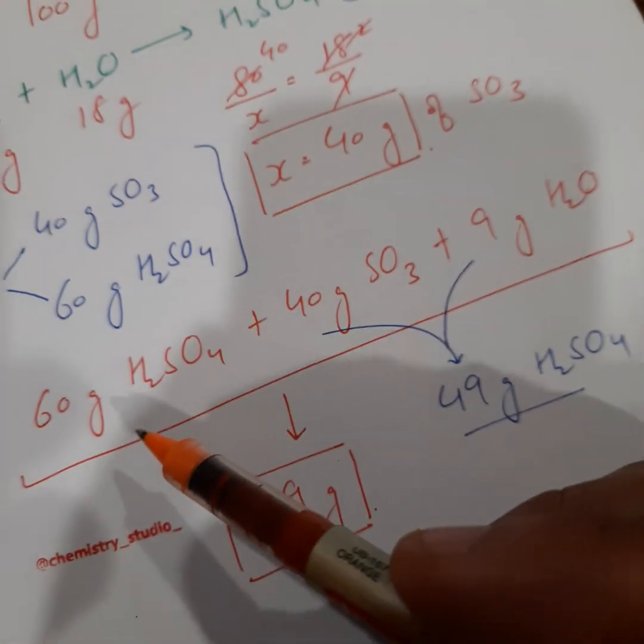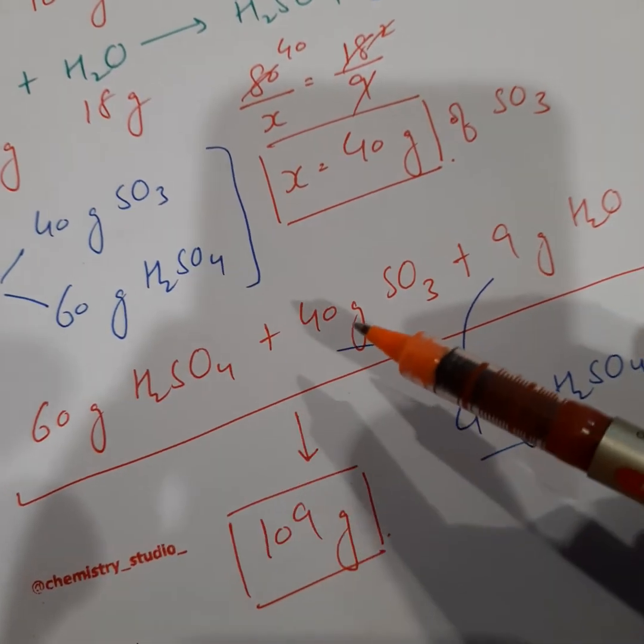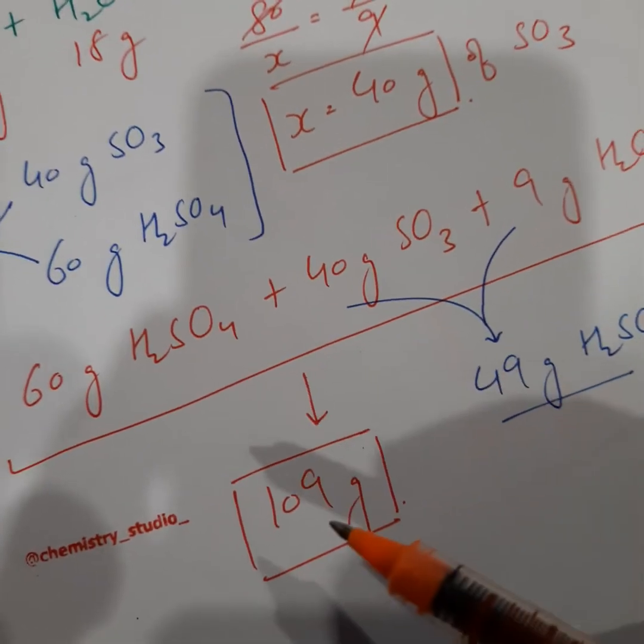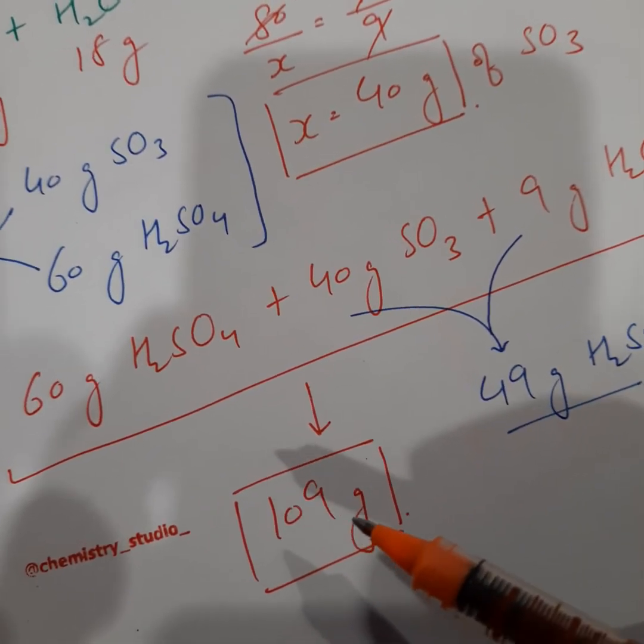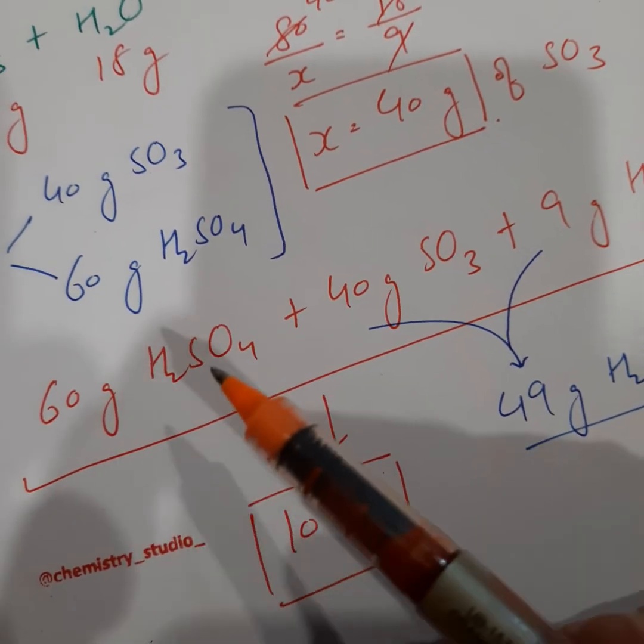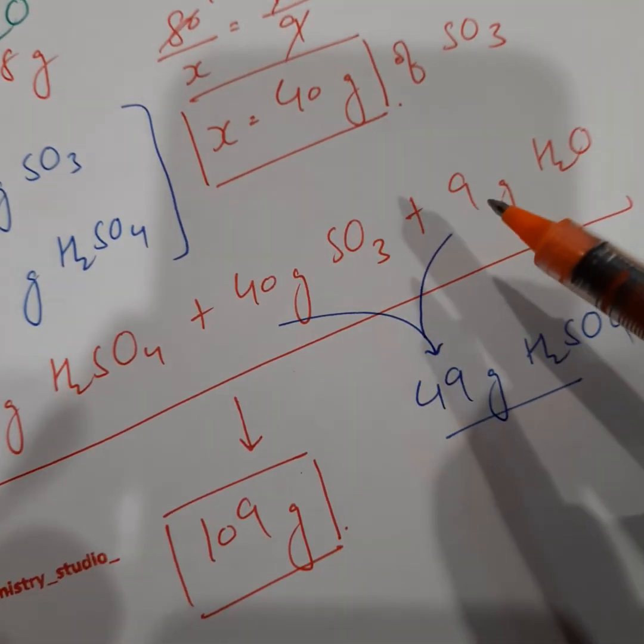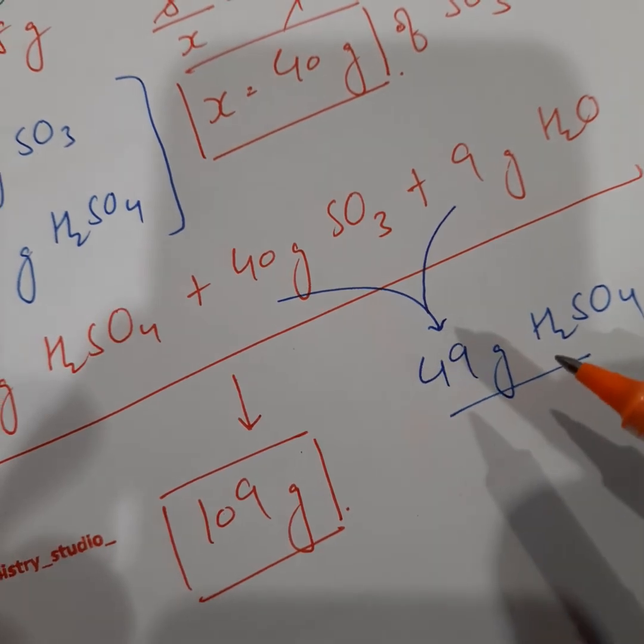So what happens finally? 60 grams sulfuric acid, 40 grams of sulfur trioxide. When 9 grams of water is added, overall it becomes 109 grams. How 109 grams? 60 grams of sulfuric acid as it is, the 40 grams SO3 and 9 grams of water are going to react with each other to form 49 grams of sulfuric acid.